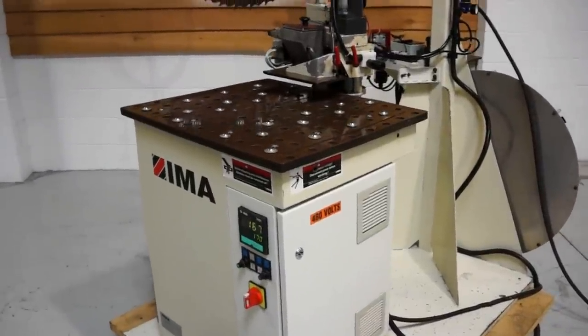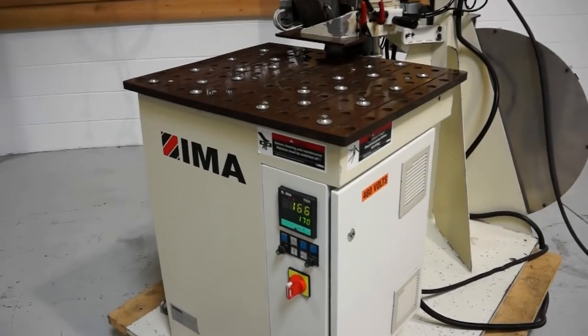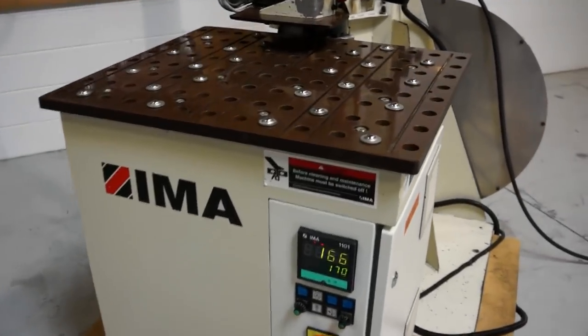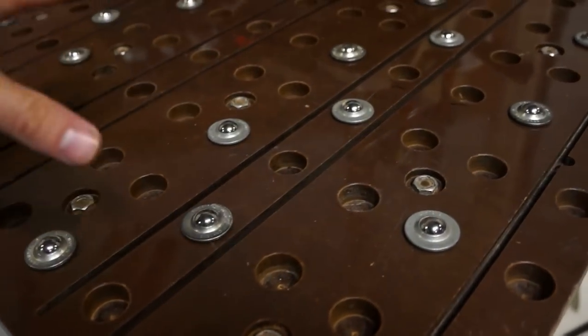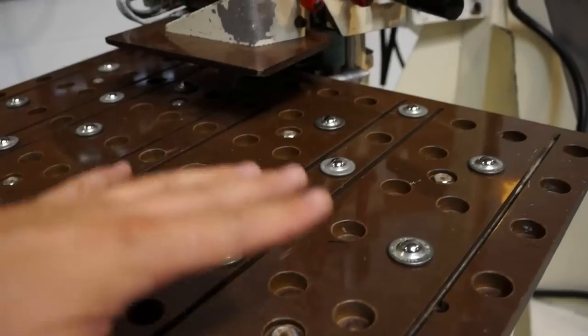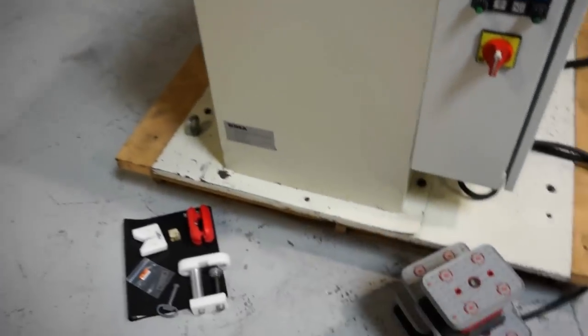First of all, it is in stationary mode. In this mode, it's used just like a regular contour edge bander. You have a roller table and you're going to take these rollers and move them around to suit your needs. Your material is going to feed in and you manipulate your material around like you would a normal contour edge bander.